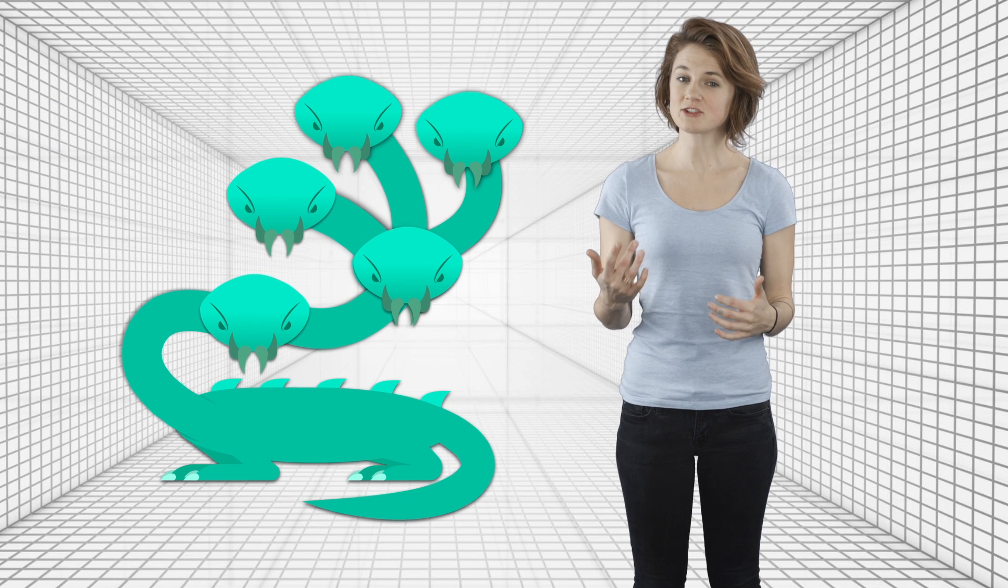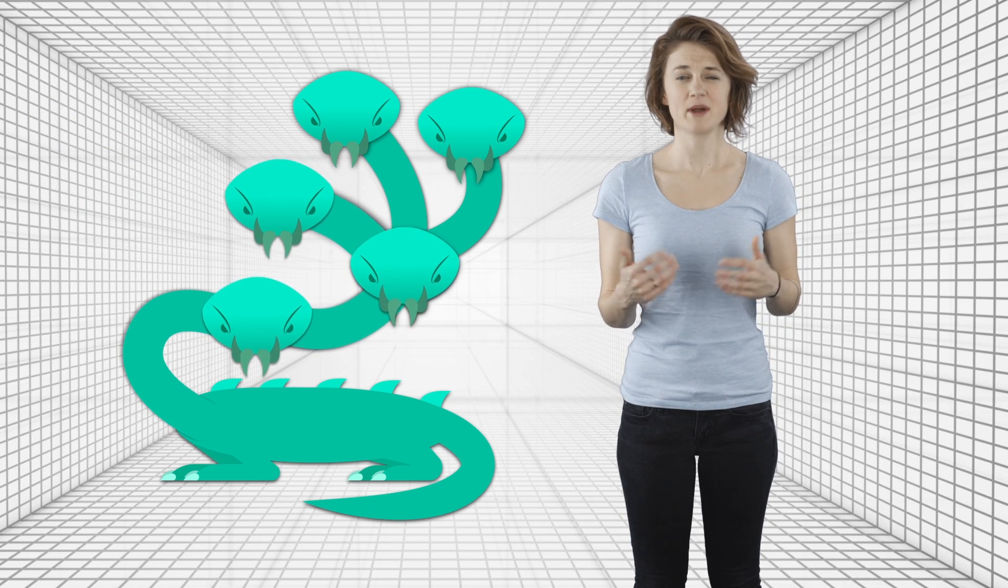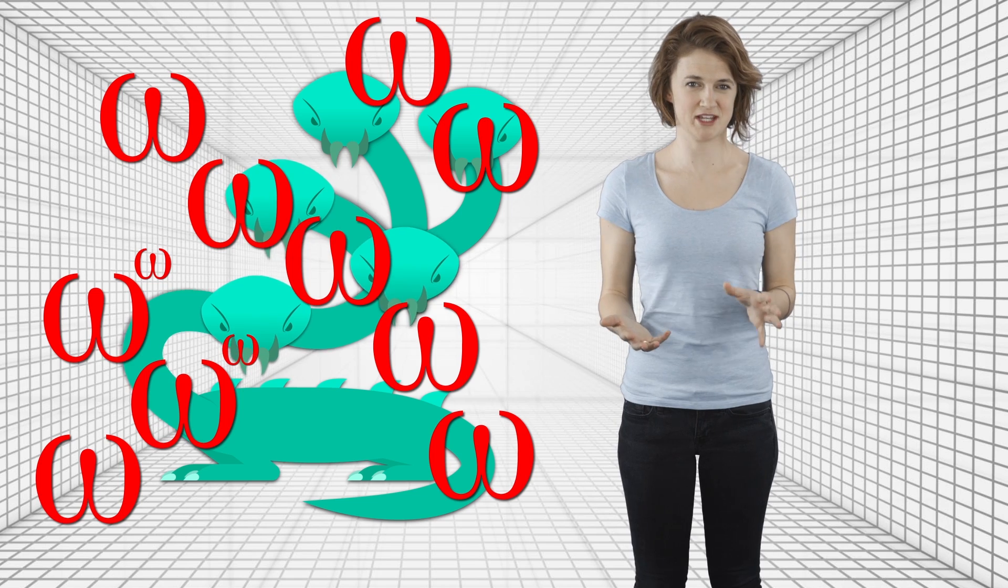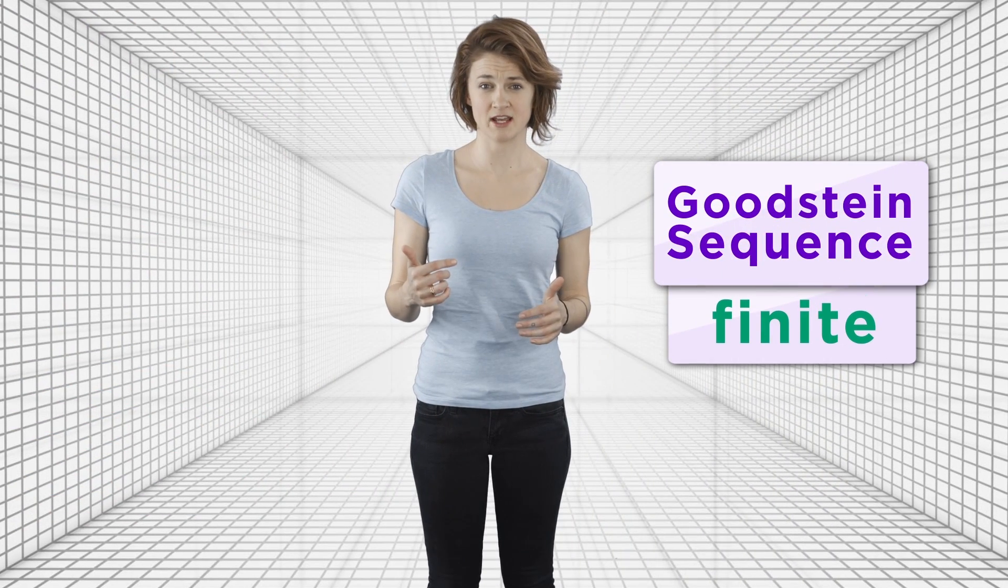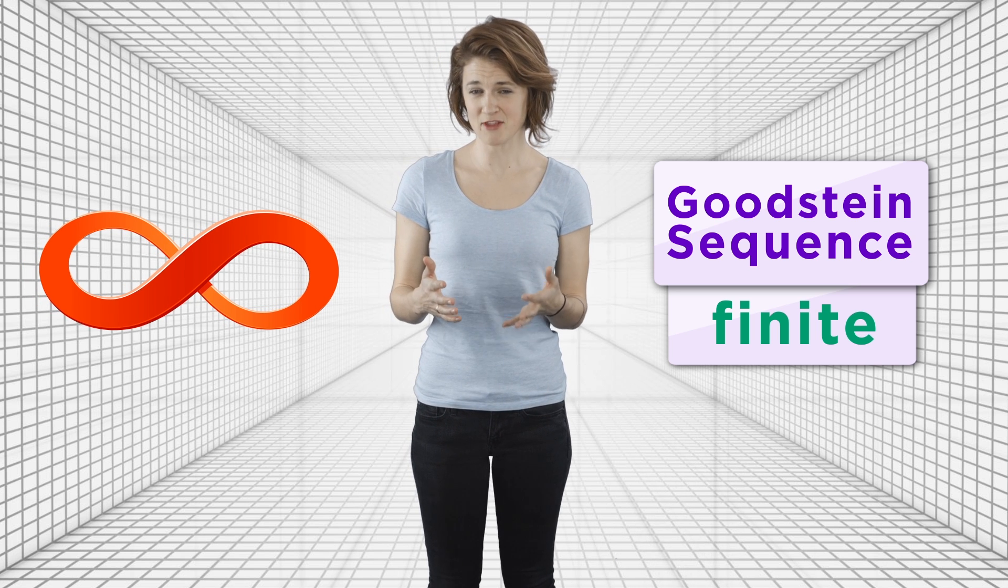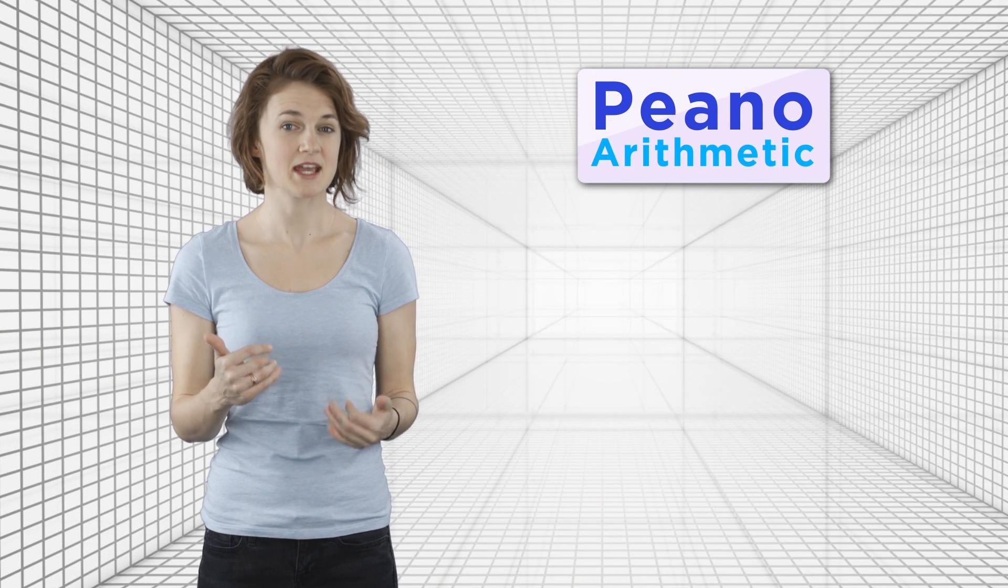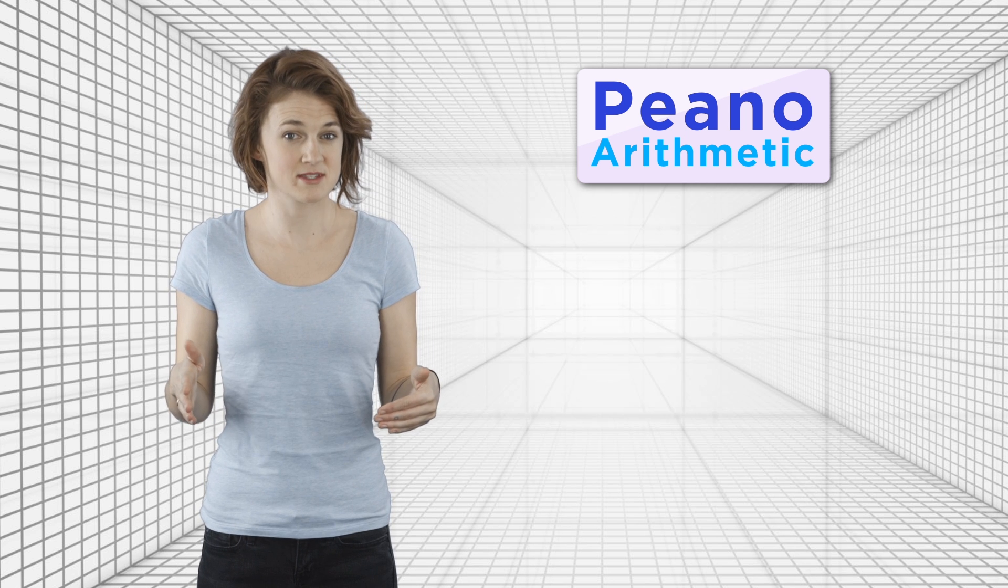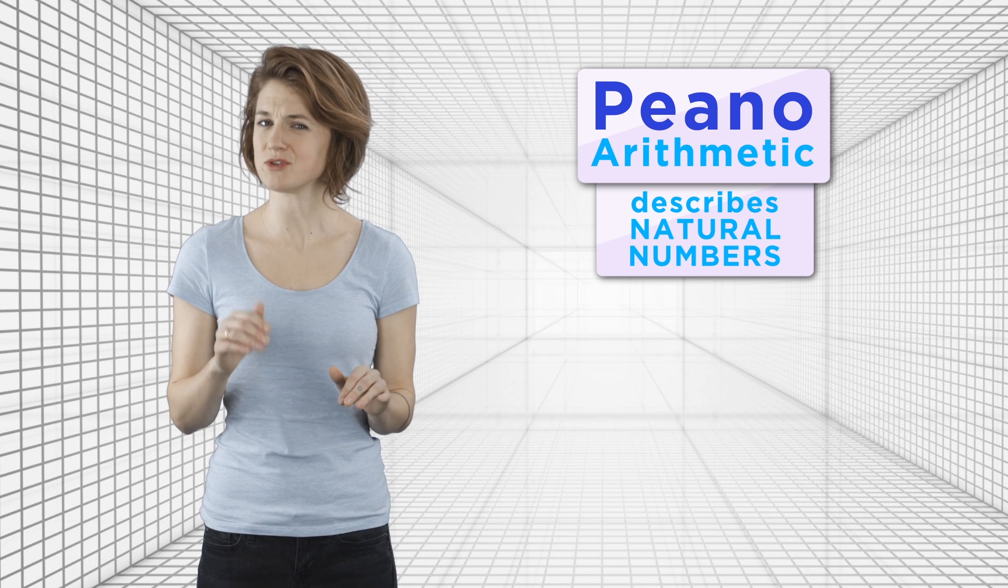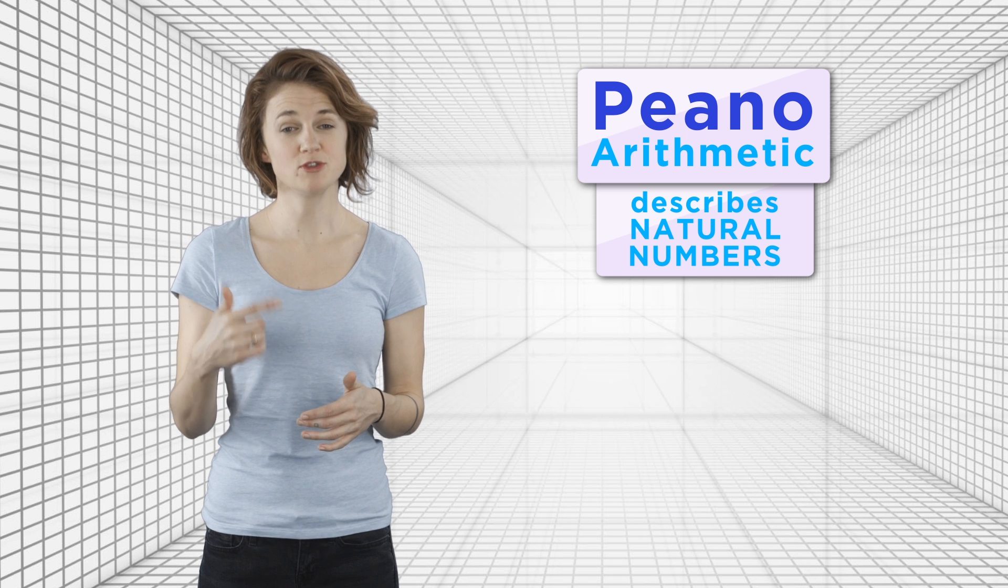When I first encountered Goodstein sequences and their wild hydra counterpart and learned about the proof that shows they eventually go to zero, my initial reaction was, why are there all these infinities in the proof? It seems so unnecessarily complicated. All the Goodstein sequences are finite, so why should we need to reason about infinity in order to prove that they terminate? That's not usually the way math works. Amazingly, the Kirby-Paris theorem shows that the infinities in the proof are necessary in the following sense. Peano arithmetic is a set of basic rules, or axioms, that describe the behavior of the natural numbers. Pretty much all the ordinary arithmetic and properties that you know and love about the natural numbers can be proved using Peano arithmetic.